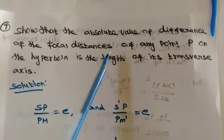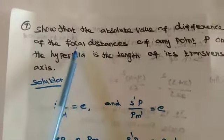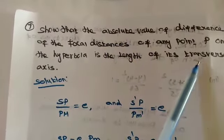So in this question, absolute value of the difference of focal distance. So difference of focal distance is equal to length of transverse axis.